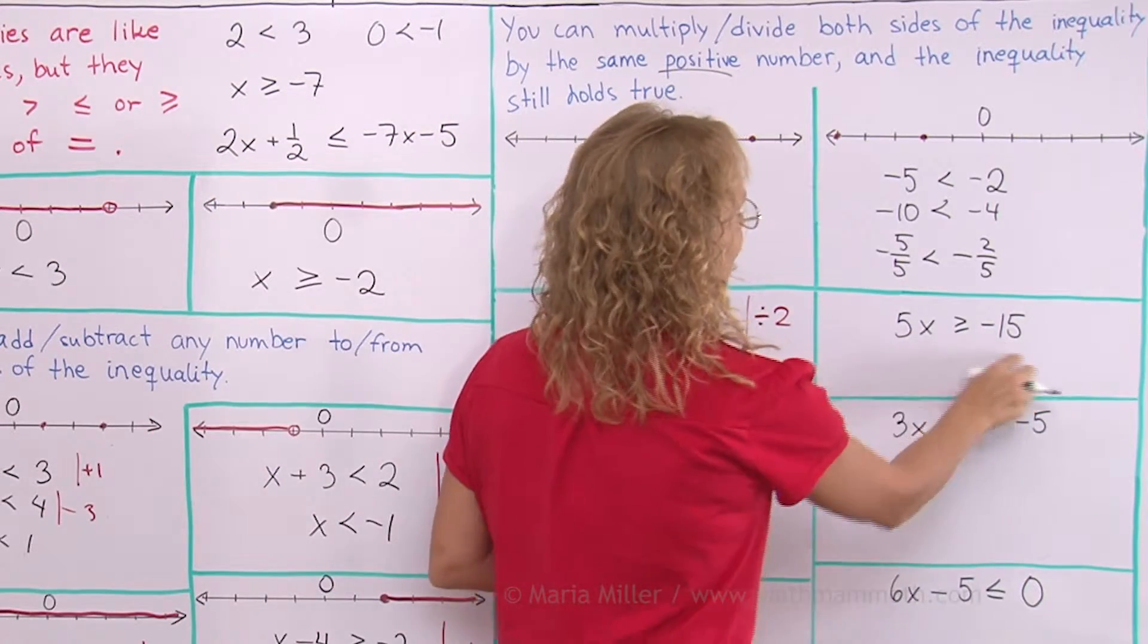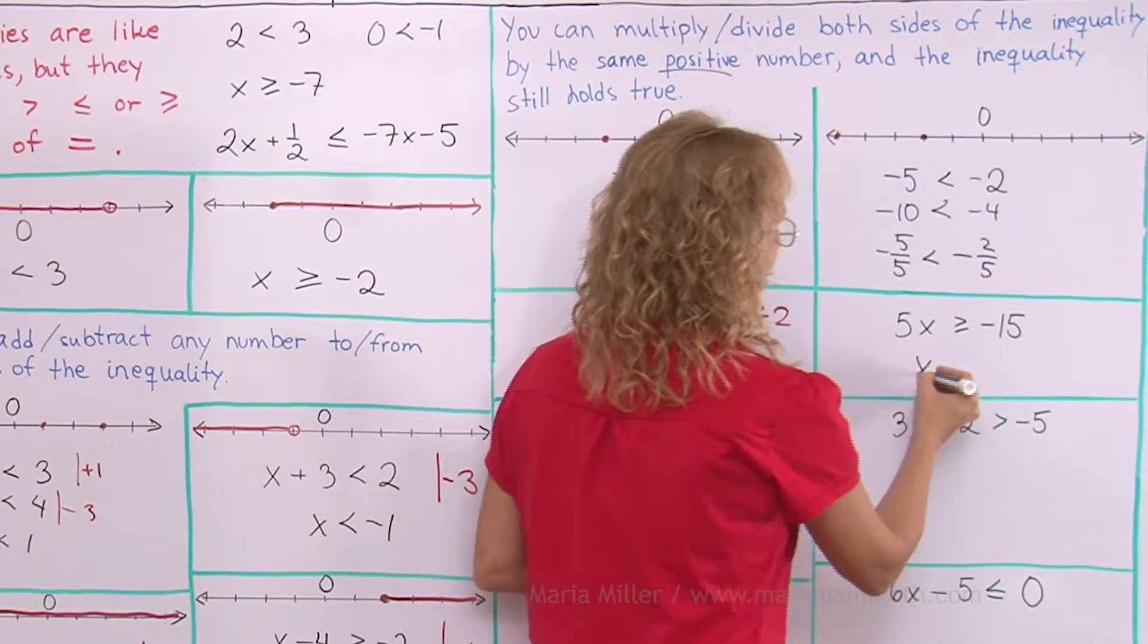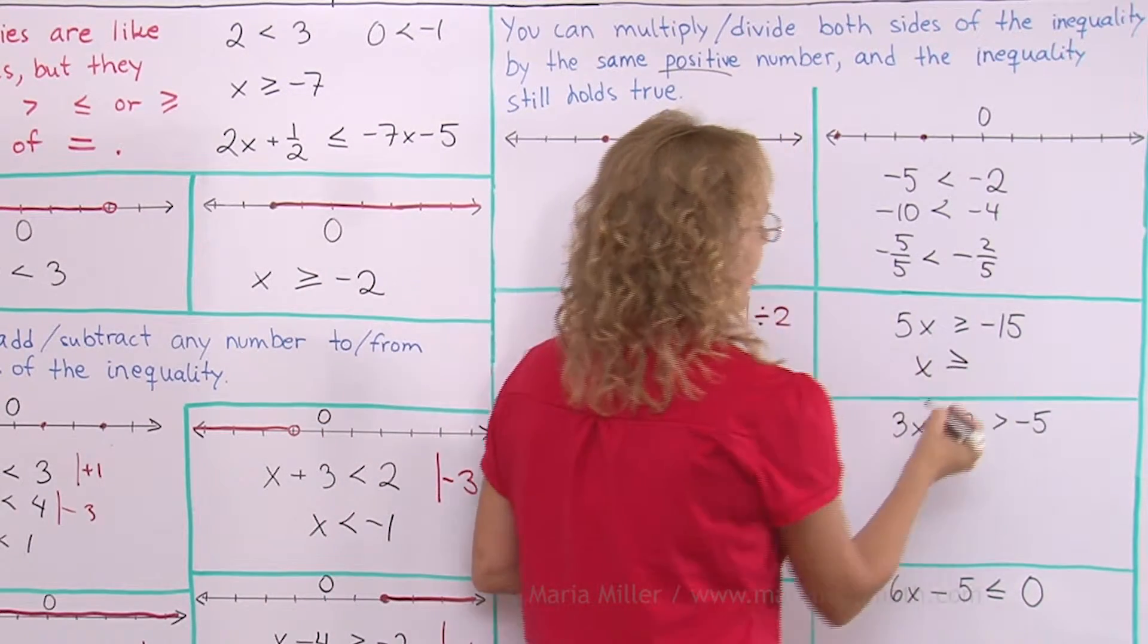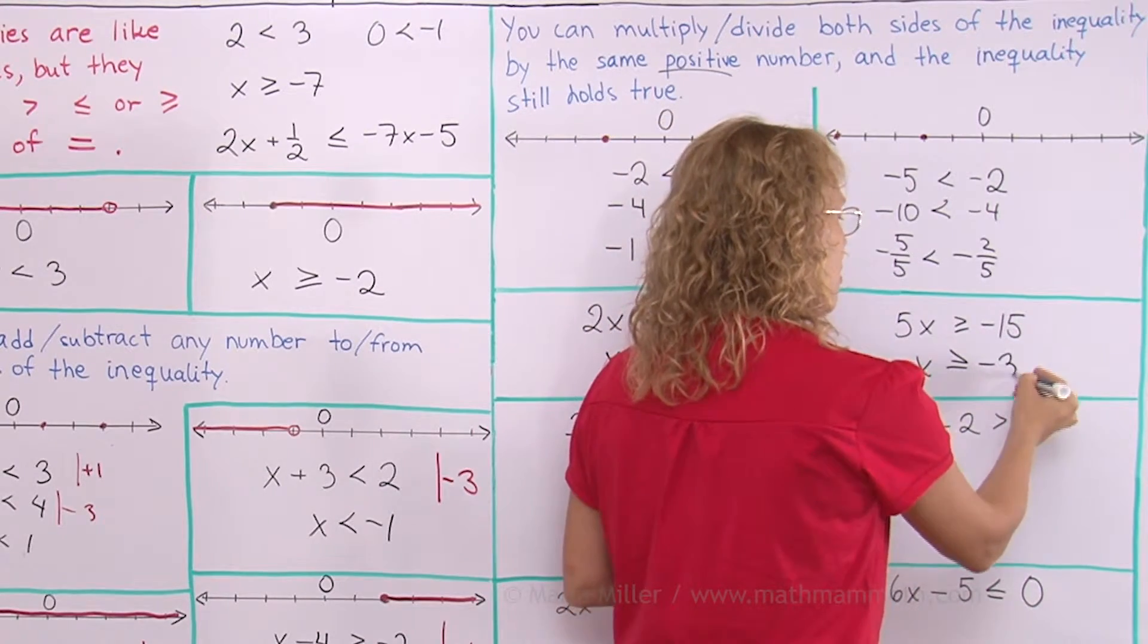Over here, I divide both sides by, by what? By 5, right? That way, x is alone here. Greater than or equal does not change. And then here, negative 15 divided by 5 is negative 3.